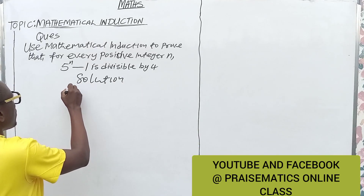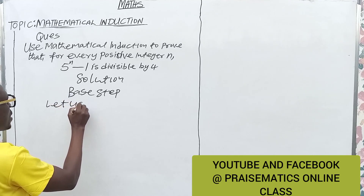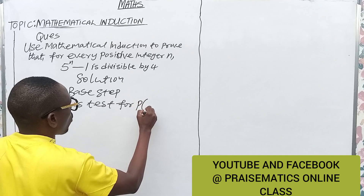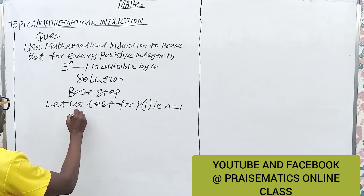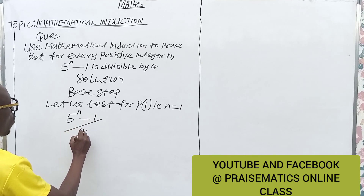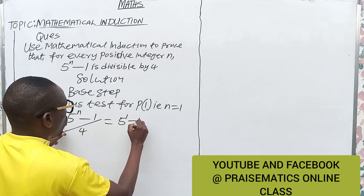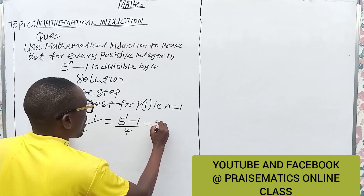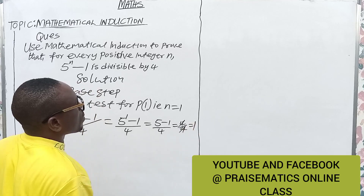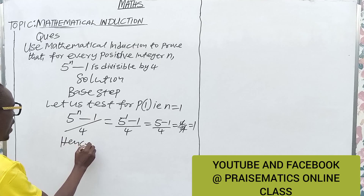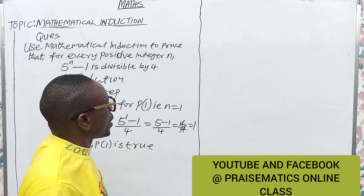Solution. Let us look at Case 1, known as the base step. We test for P(1), that is n equals 1. We have 5 raised to the power 1 minus 1, which is 5 minus 1, all over 4, that is 4 over 4, which equals 1. Yes, it is divisible by 4. Hence P(1) is true.